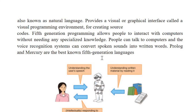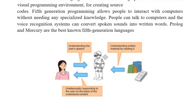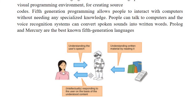Prolog and Mercury are the best known fifth generation languages. You can see in this diagram there is a machine robot and a person — it asks something to the machine and the machine responds to the user.